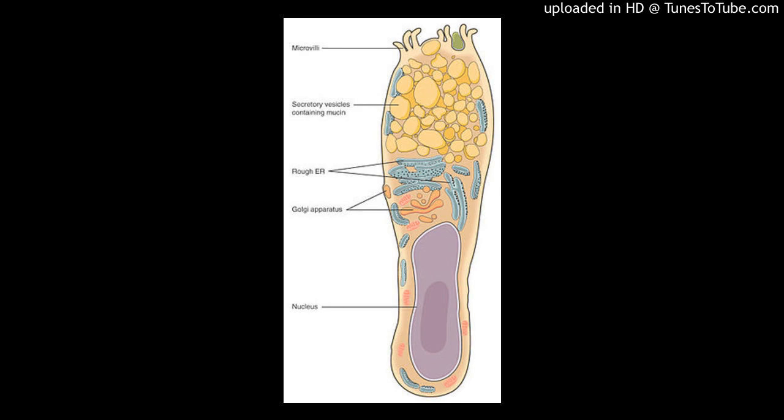Goblet cells within the conjunctival epithelium are specialized cells that secrete mucins onto the surface of the eye. Recent research has demonstrated new characteristics of the cells, including factors influencing their differentiation, their gene products and their functions at the ocular surface.